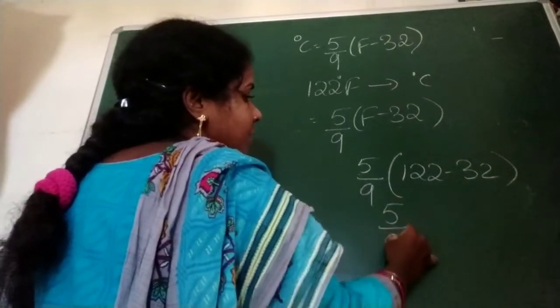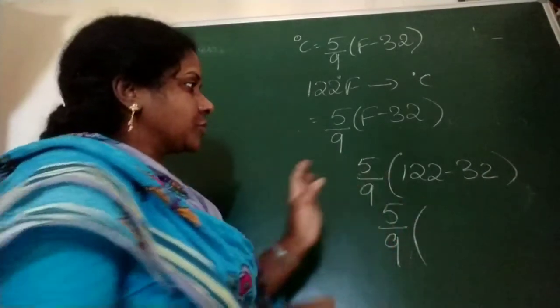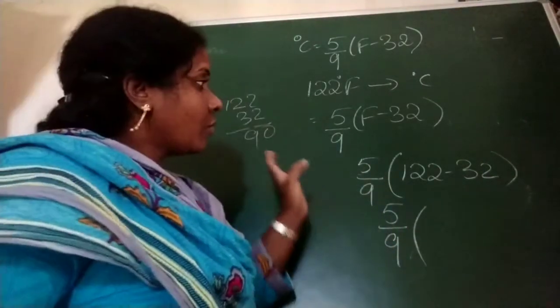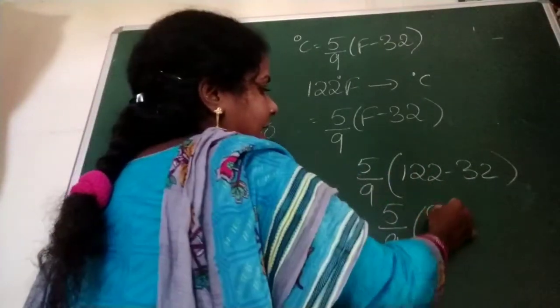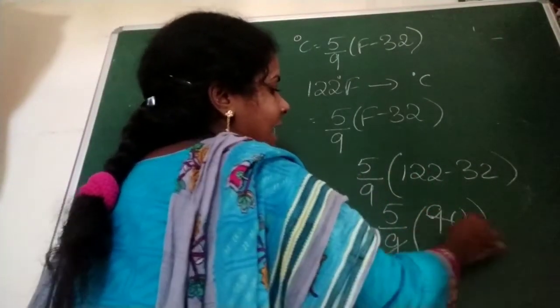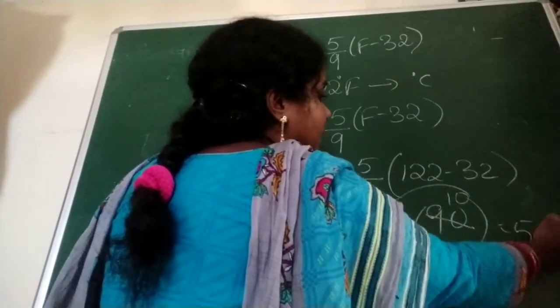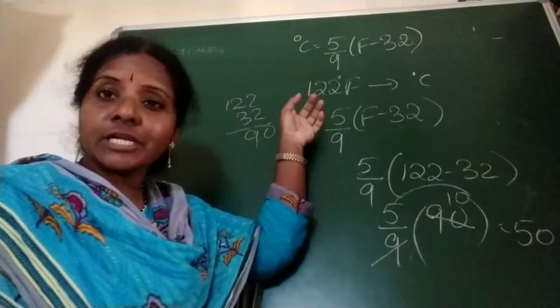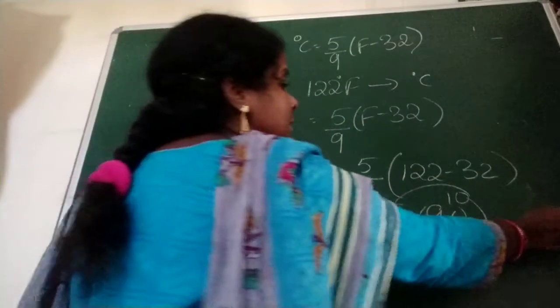122 minus 32, 5 by 9. 122 minus 32 is 90. 9 ones and 9 tens. So answer is 5 tens, 50. 50 what? She convert into degree Celsius. So 50 degrees Celsius.